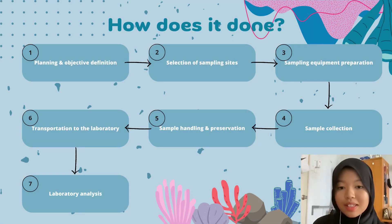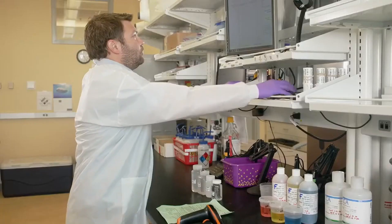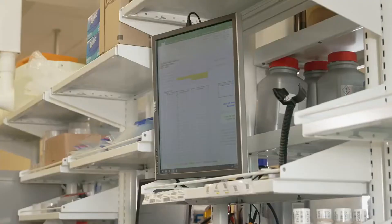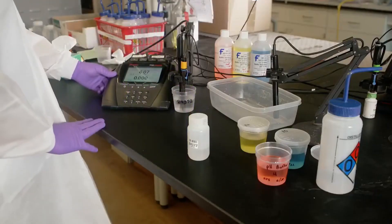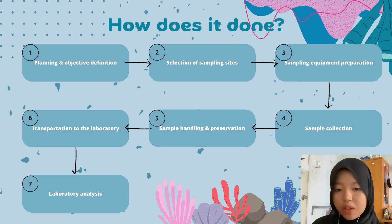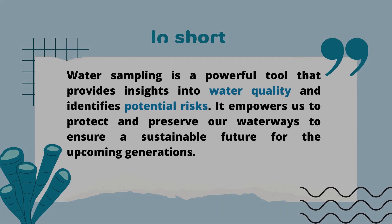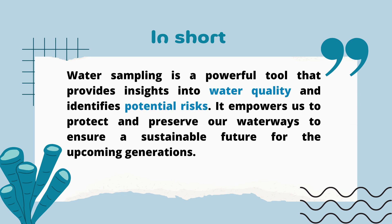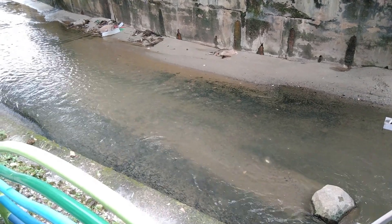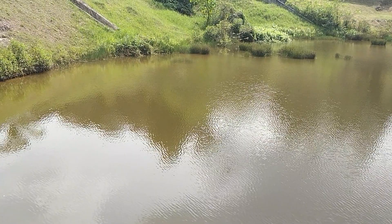Lastly, laboratory analysis. Once the water samples reach the laboratory, trained technicians perform various tests and analyses to measure parameters such as pH, dissolved oxygen, nutrient levels, heavy metals, bacteria, and pollutants. The results are used to evaluate the water quality and its suitability for different purposes. In short, water sampling is a powerful tool that provides insights into water quality and identifies potential risks. It is also essential for understanding the safety and health of water sources and guiding effective environmental management and public health practices.